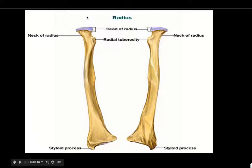Some things to know about the radius: the head, which is this top part up here; the radial tuberosity, which is a little projection sticking out; and the styloid process, which is the end point here.